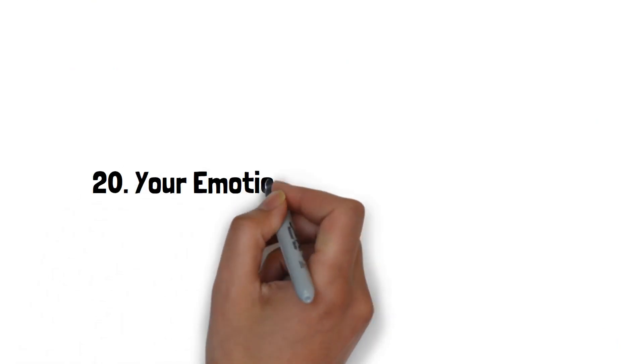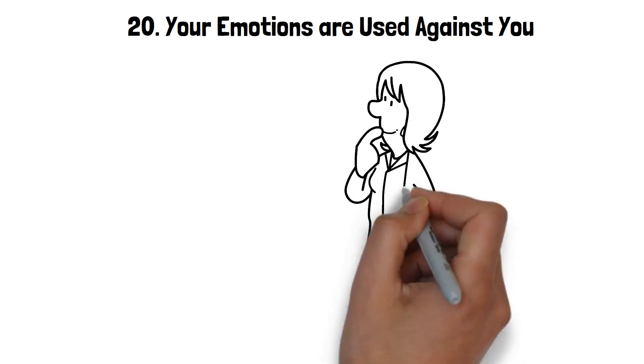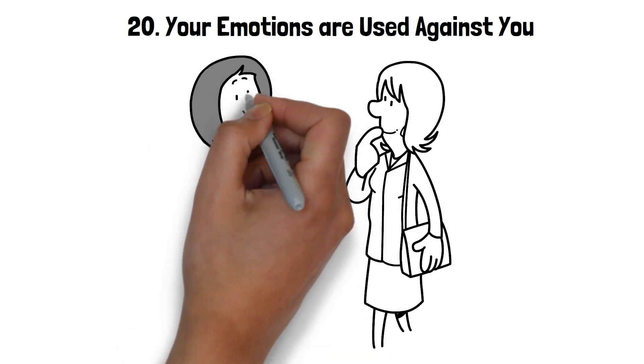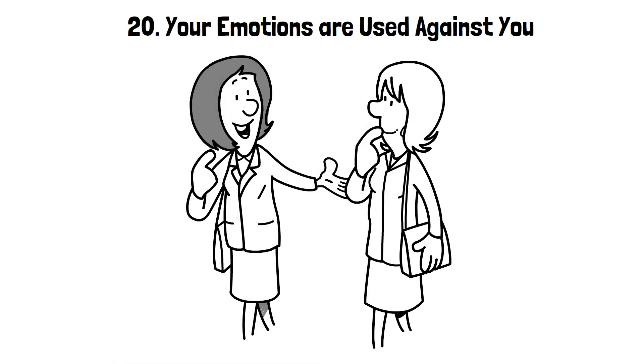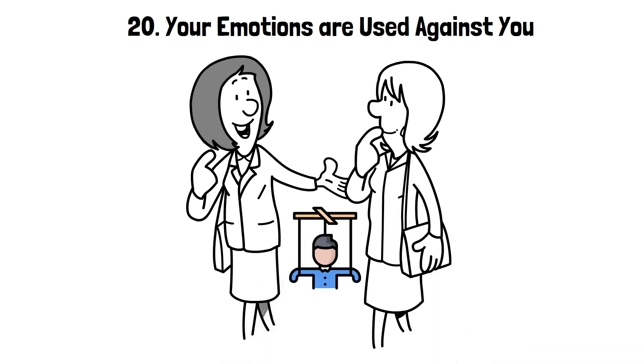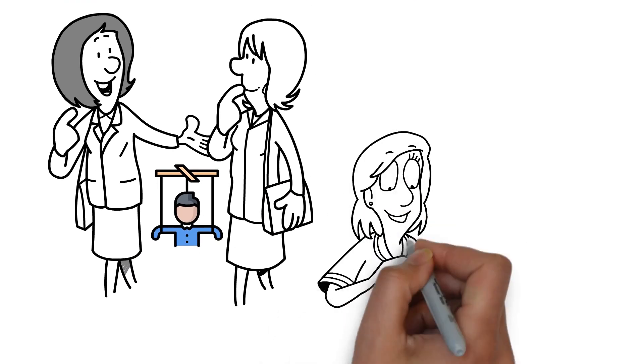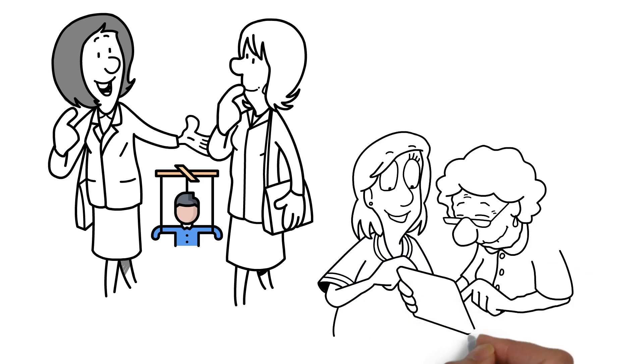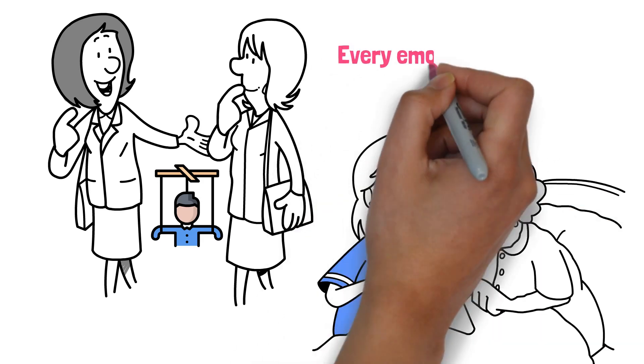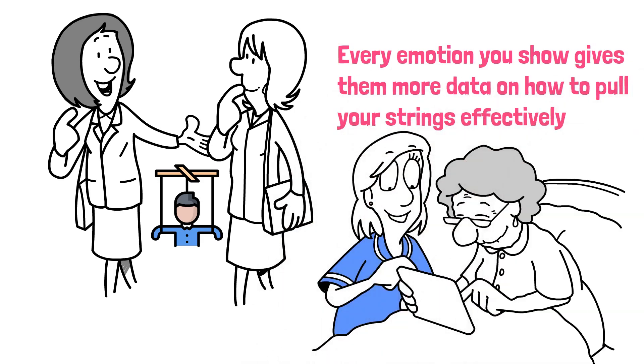20. Your emotions are used against you. Empathy, love and trust are beautiful emotions that make us human. Yet in the hands of a manipulator, they become tools of control. They know just how to leverage your feelings for their own gain. If you're a kind-hearted person, they'll exploit your compassion. If you've confided your fears, they'll use them to instill insecurity. Every emotion you show gives them more data on how to pull your strings effectively.